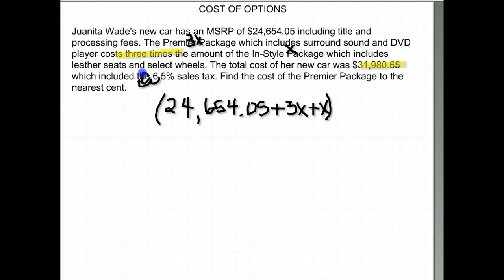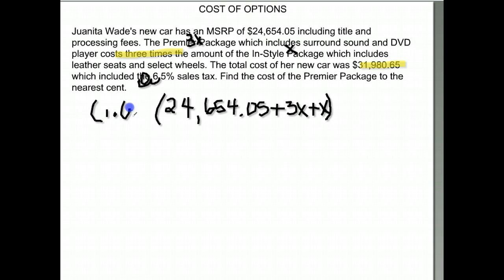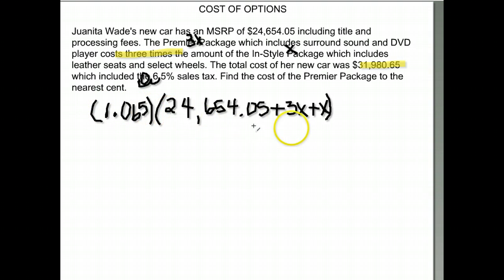Normally you'd take the total times point zero six five and then add it to the total. A shortcut is to multiply by one plus your rate. The one gives you your original total and the rate gives you the tax — all in one step. So multiplying by one point zero six five gives us the total with tax included.